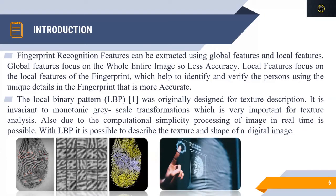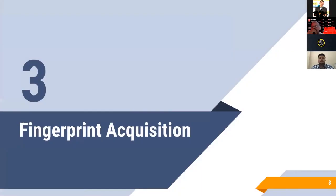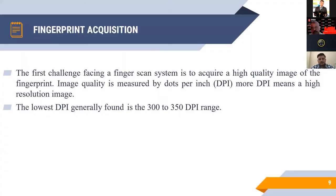In fingerprint recognition, fingerprints have local features and global features. For local features, two methods are most popular: Local Binary Pattern and Gabor method. For global features, we have LDA (Linear Discriminant Analysis) and PCA (Principal Component Analysis). Local features are marks, dots, or identities within the finger that identify a particular person. Global features refer to the shape of the finger — even twins have different fingerprints, so both shape and local features differ.